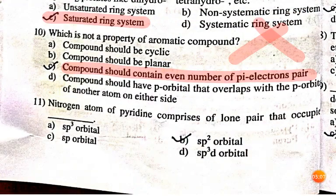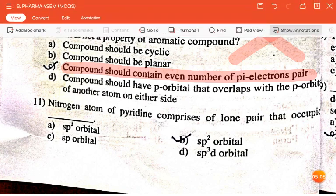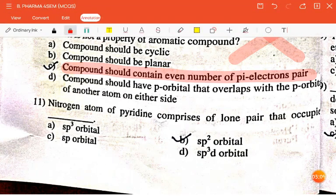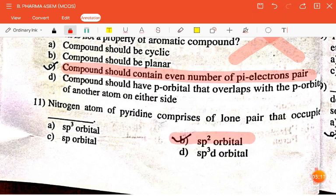The next question is: the nitrogen atom of pyridine comprises of a lone pair that occupies sp3, sp2, sp, or sp3d orbital? The correct answer is sp2 orbital.